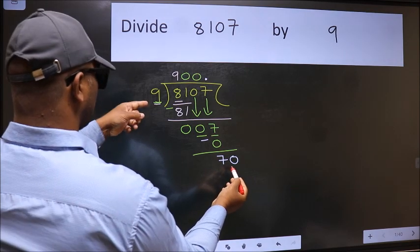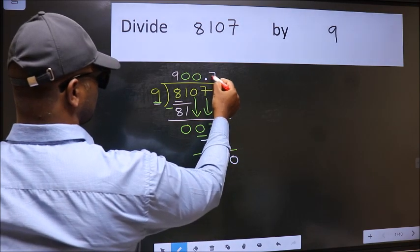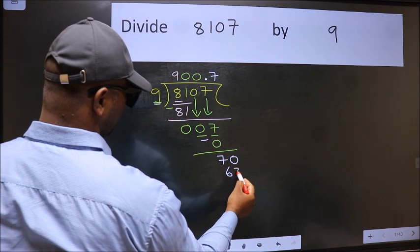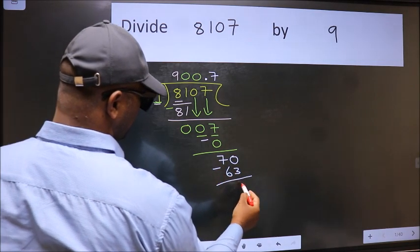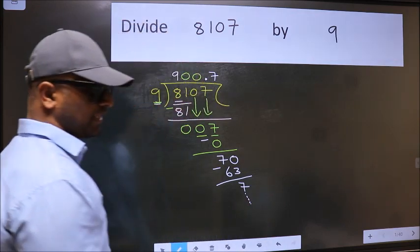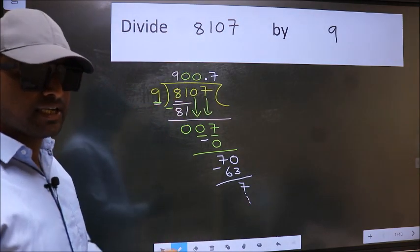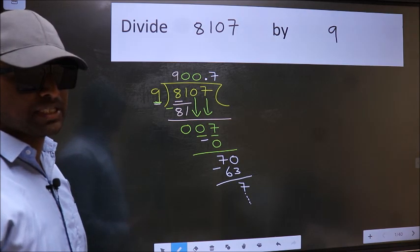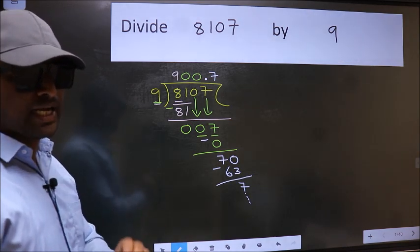A number close to 70 in 9 table is 9 times 7, 63. Now we should subtract. We get 7. And you continue the division. I am not doing that. Did you understand where the mistake happens? You should not do that mistake.